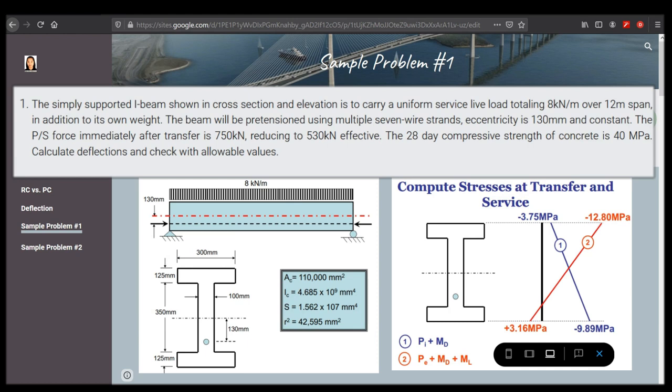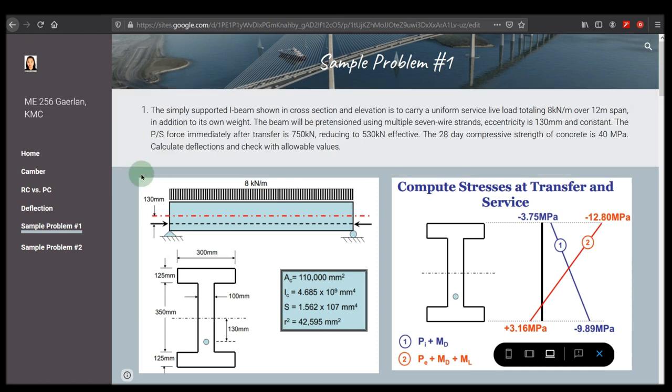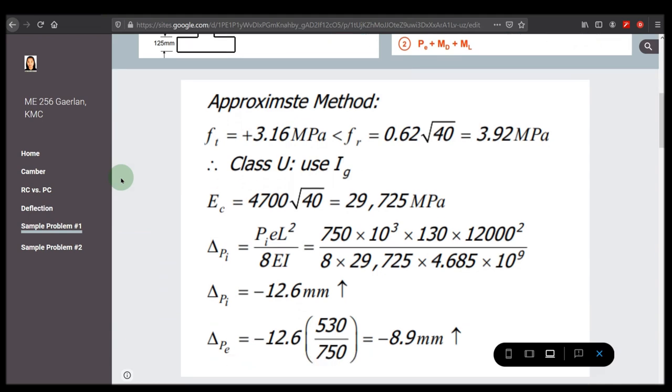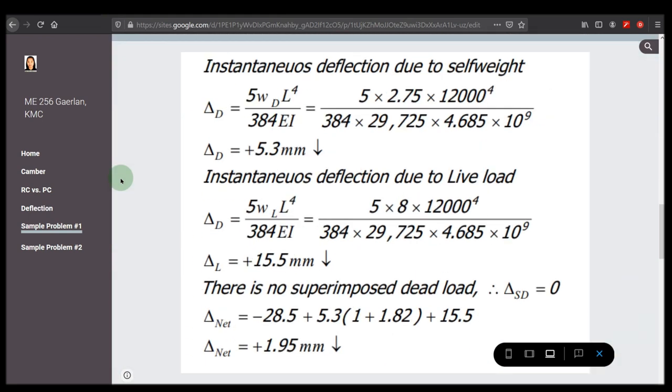The prestressing force immediately after transfer is 750 kN, reducing to 530 kN effective. The 28-day compressive strength of concrete is 40 MPa. We need to calculate the deflection and check with allowable values. The diagram is shown here and the solution for solving the problem is through approximate method.